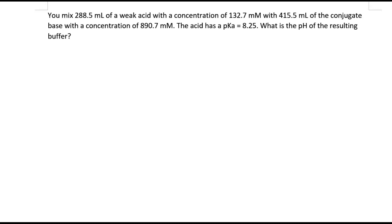In this example we want to calculate the pH of a buffer. We generate this buffer by mixing a certain volume of weak acid with a given concentration with a certain volume of the conjugate base which also has a certain concentration, and we want to find out what is the pH of the resulting buffer.